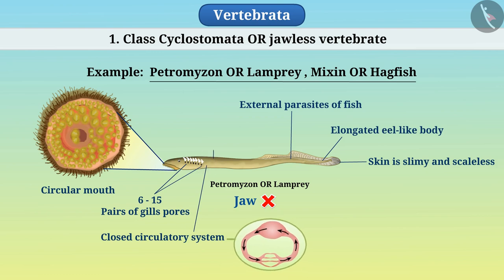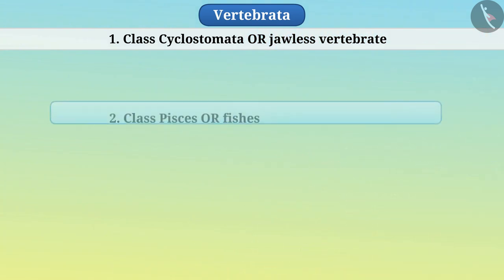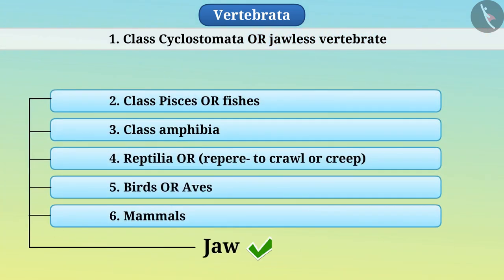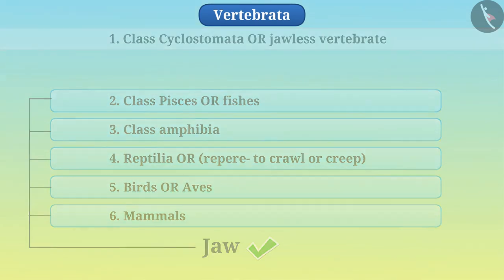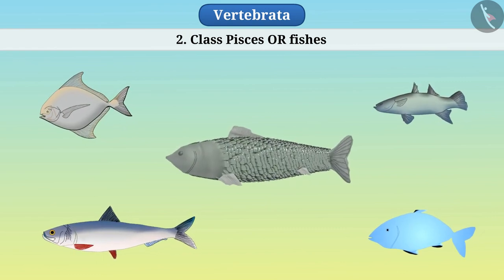They have cranial and spinal cartilage. They reproduce through sexual reproduction. Except for Cyclostomata, other vertebrates have jaws. All fish are kept in class Pisces.